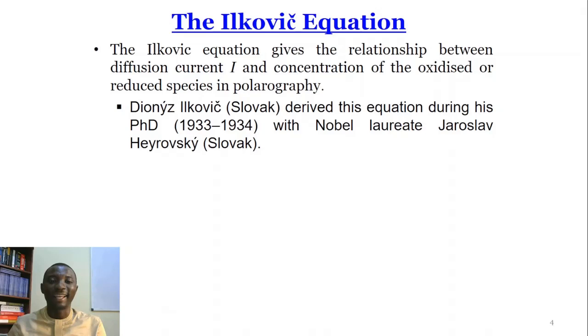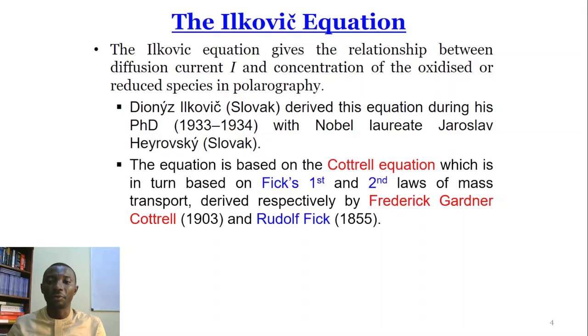This equation was derived by Ilkovič between 1933 and 1934 during his PhD with Nobel laureate Heyrovský. The Ilkovič equation is based on the Cottrell equation, which is in turn based on Fick's first and second laws of mass transport. The Cottrell equation was derived by Frederick Gardner Cottrell in 1903, and Fick's laws were formulated by Adolf Fick in 1855.